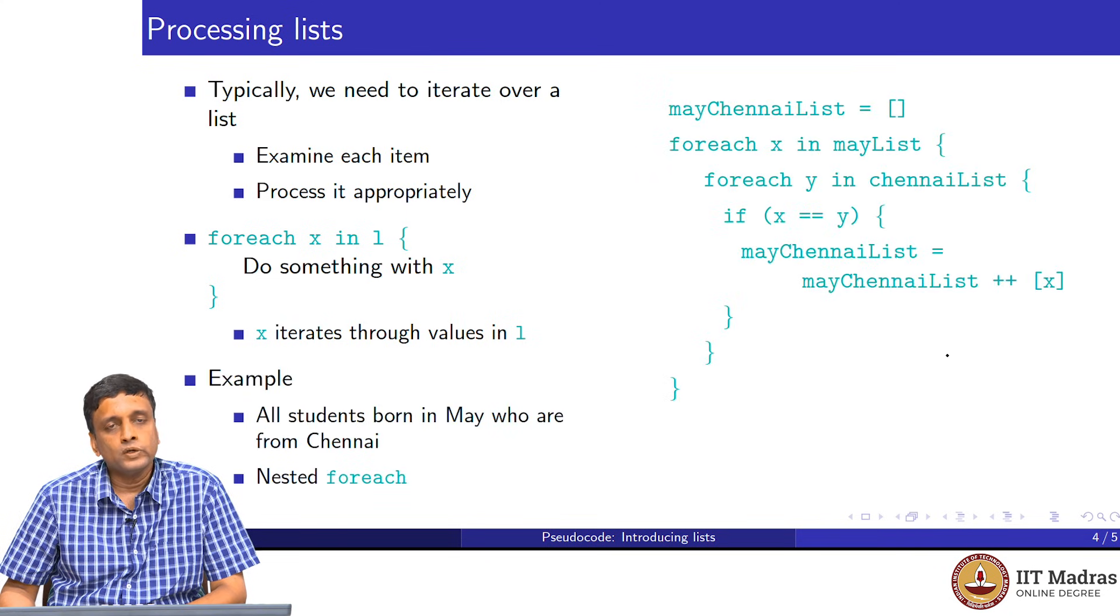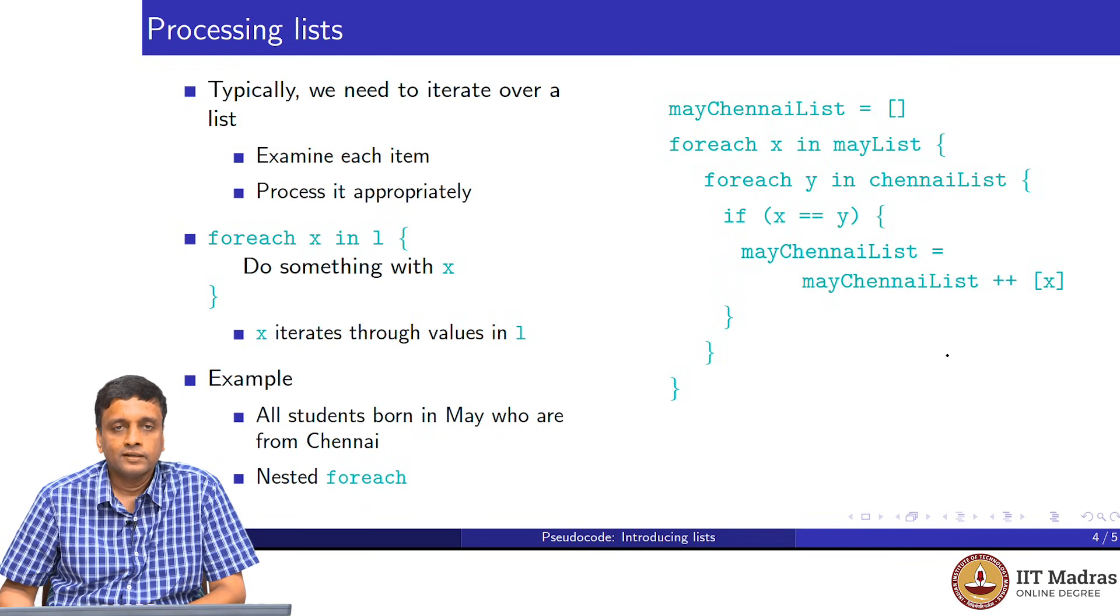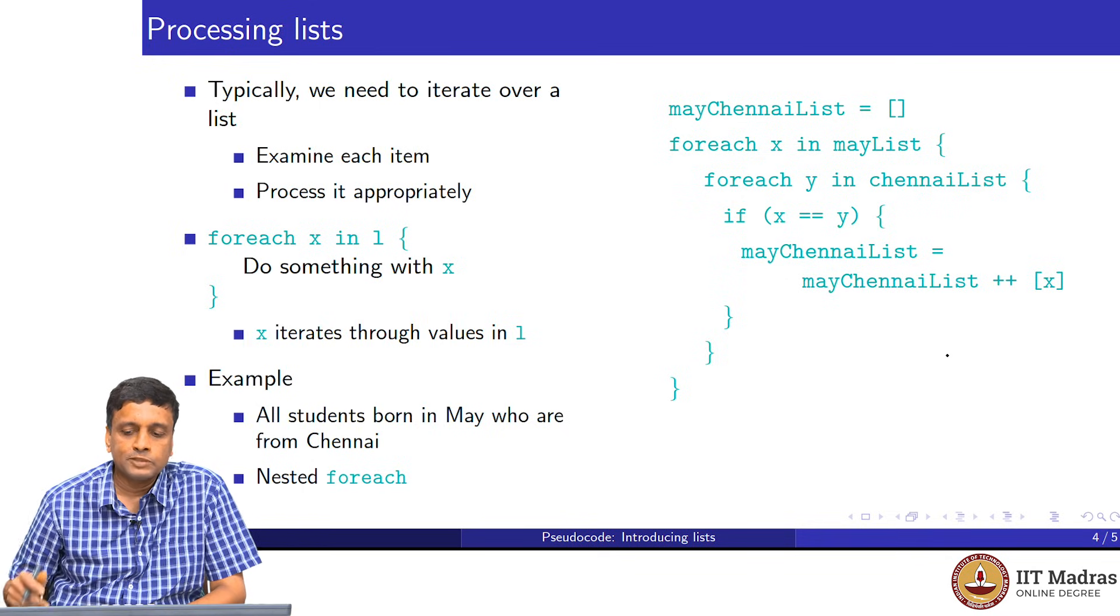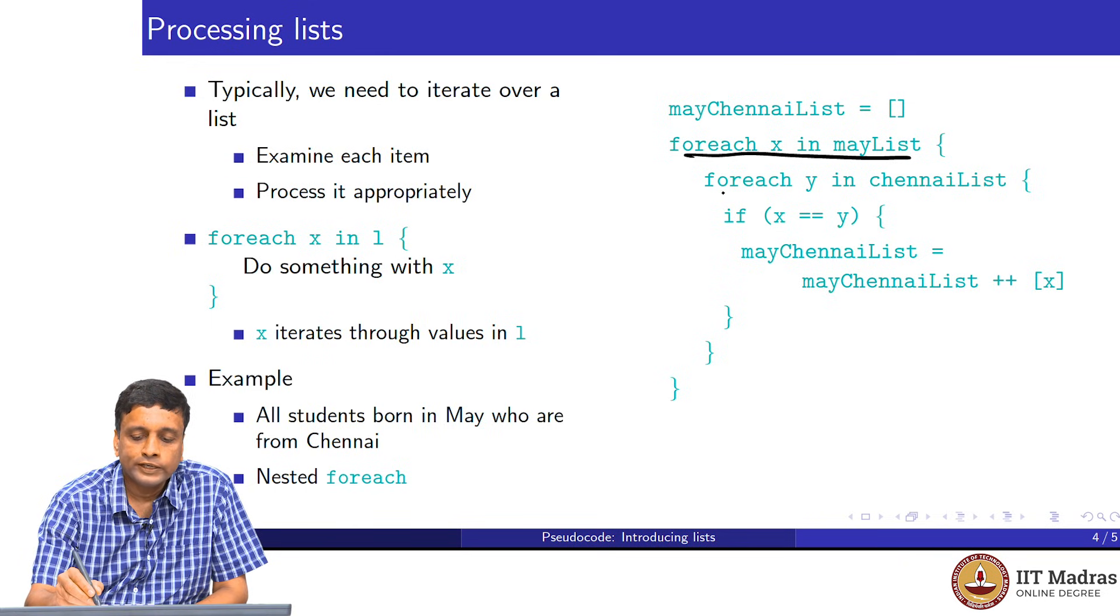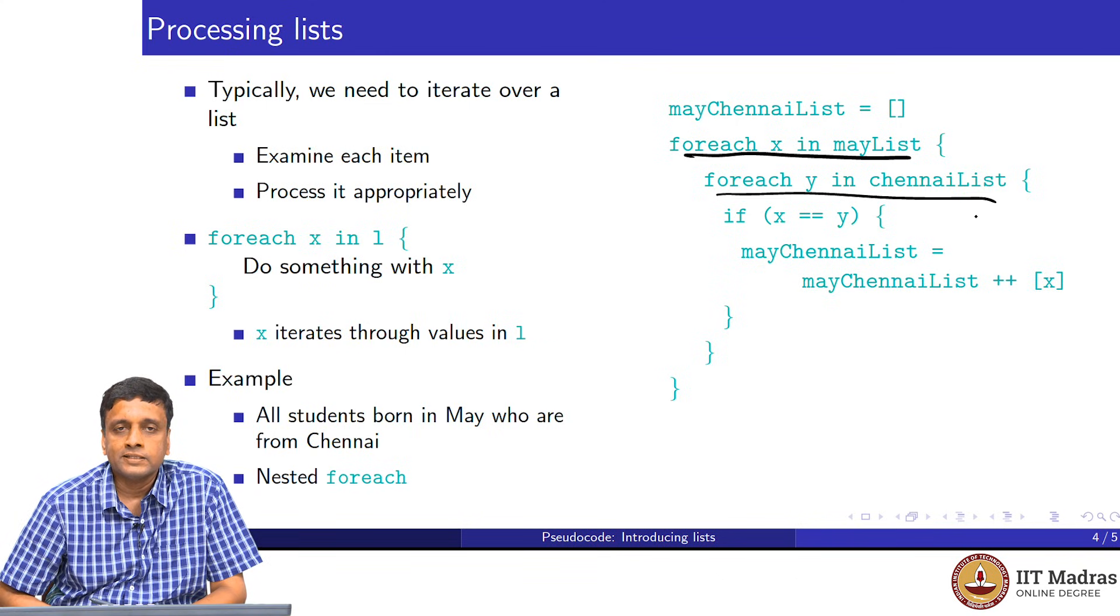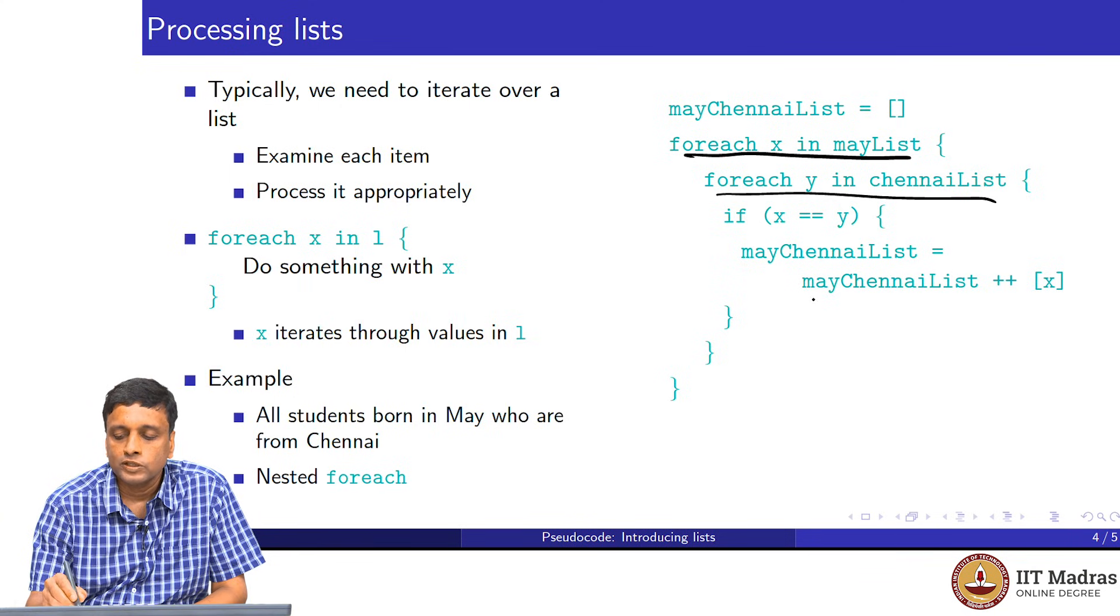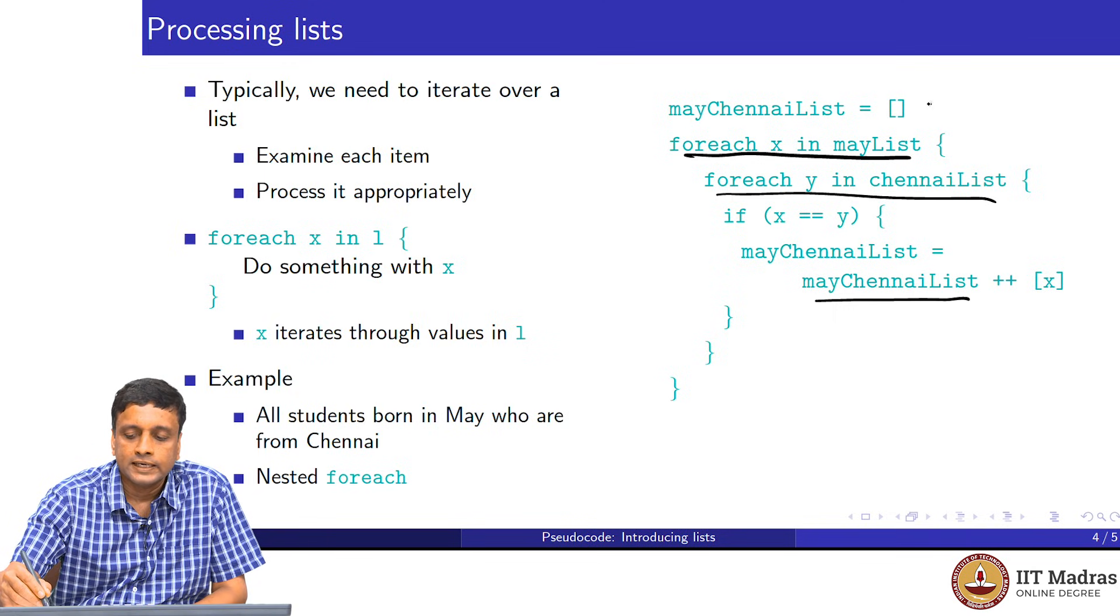As an example, we have constructed these two lists: the list of students sequence numbers who were born in May, and the sequence numbers of the students who come from Chennai. If we wanted to find out those who qualify in both lists, those who are both born in May and are from Chennai, then we will use a familiar nested loop, which is that for every sequence number which appears in the first list, we have to check whether it appears in the second list. This can be done using this new foreach operator just by nesting it. We take every x which is there in the list of students who are born in May, and then for each of those, we pick up all the y's corresponding to the students who are from Chennai.